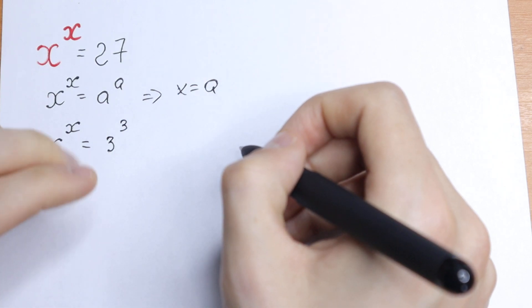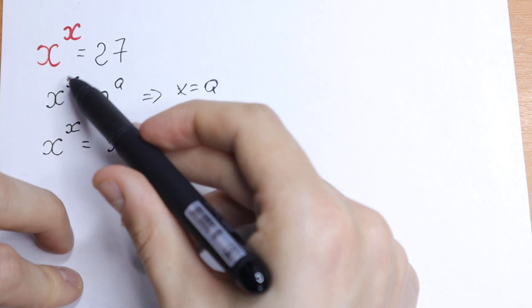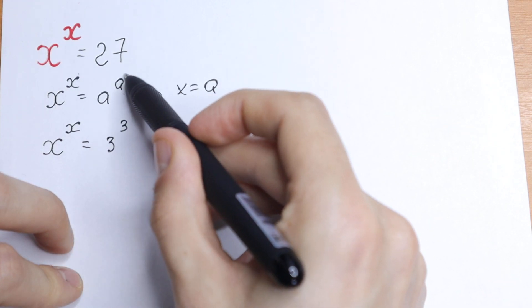3 times 3 times 3, we will have our 27. This is our case - we have same base, same exponent and same base, same exponent as well.